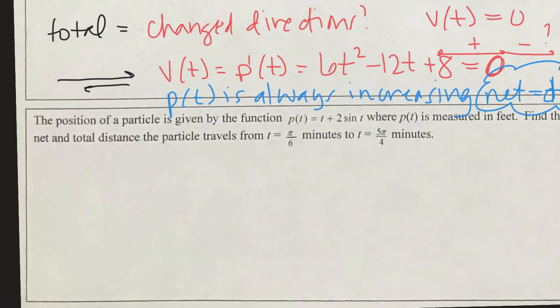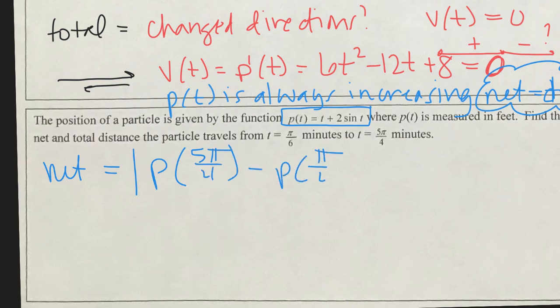We're going to do a similar thing with our second one down here, and you're going to need a calculator to do this also. The net distance is always the end, which is 5π/4, minus the beginning, which is π/6. So plug these two numbers into your calculator for both of your t values, and we should get an answer of 0.989 units—I guess feet, since we're in feet.